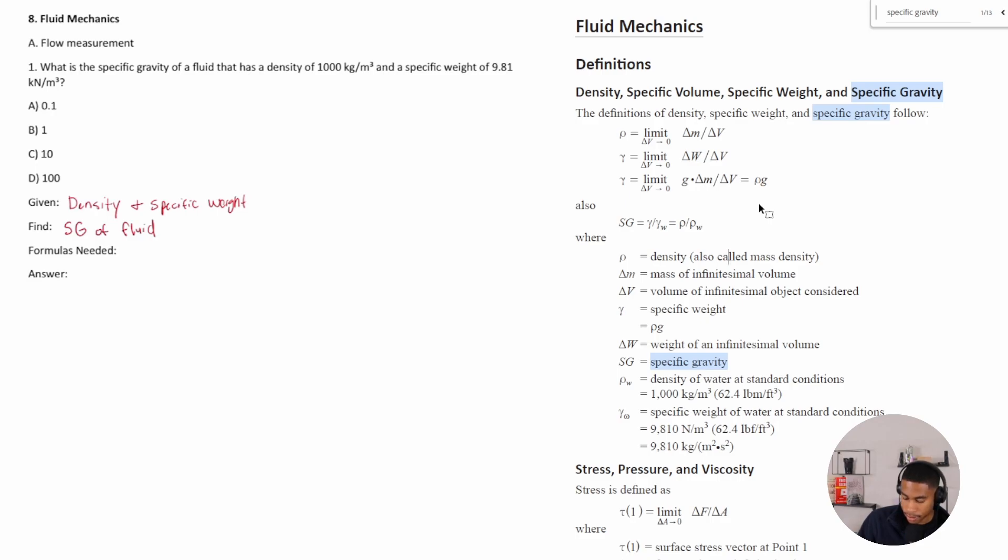Okay, so if we know that we're going to be using this formula because I feel like this is a good place to start, we have... So we'll just say SG is equal to density over density of water, so we have the density of the fluid. What is the density of water? Well, it gives us the density of water here - one thousand kilograms per meter cubed.